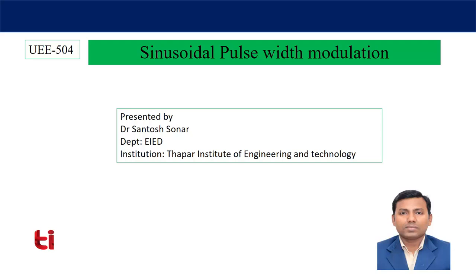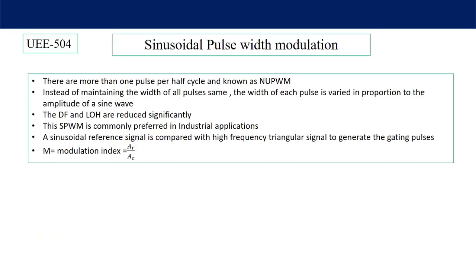In SPWM, there is more than one pulse per half cycle, so it is also a form of multiple pulse width modulation. It is known as non-uniform pulse width modulation. Compared to the previous technique, here the width of the pulses are not the same — that's why it is called non-uniform pulse width modulation.